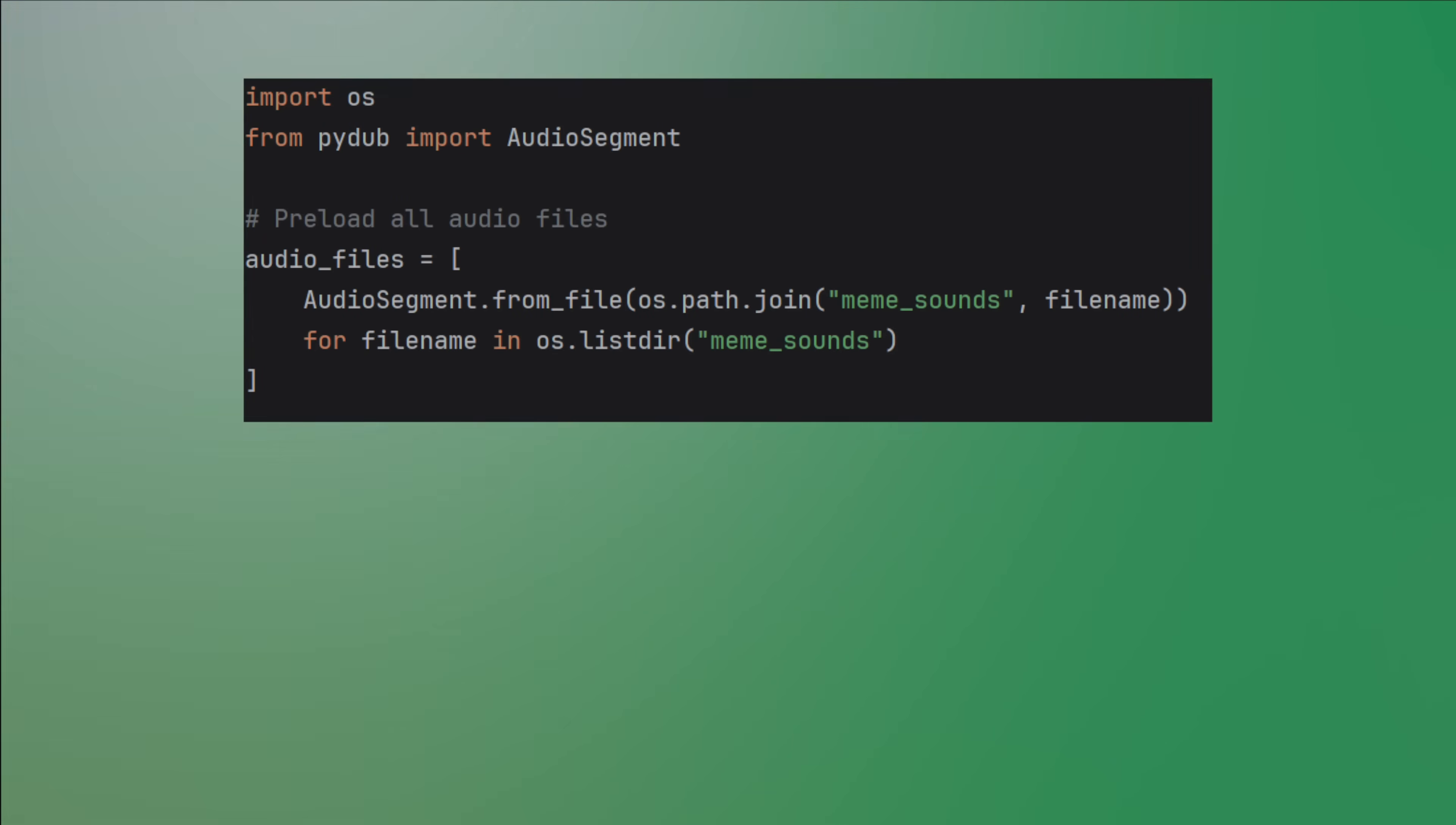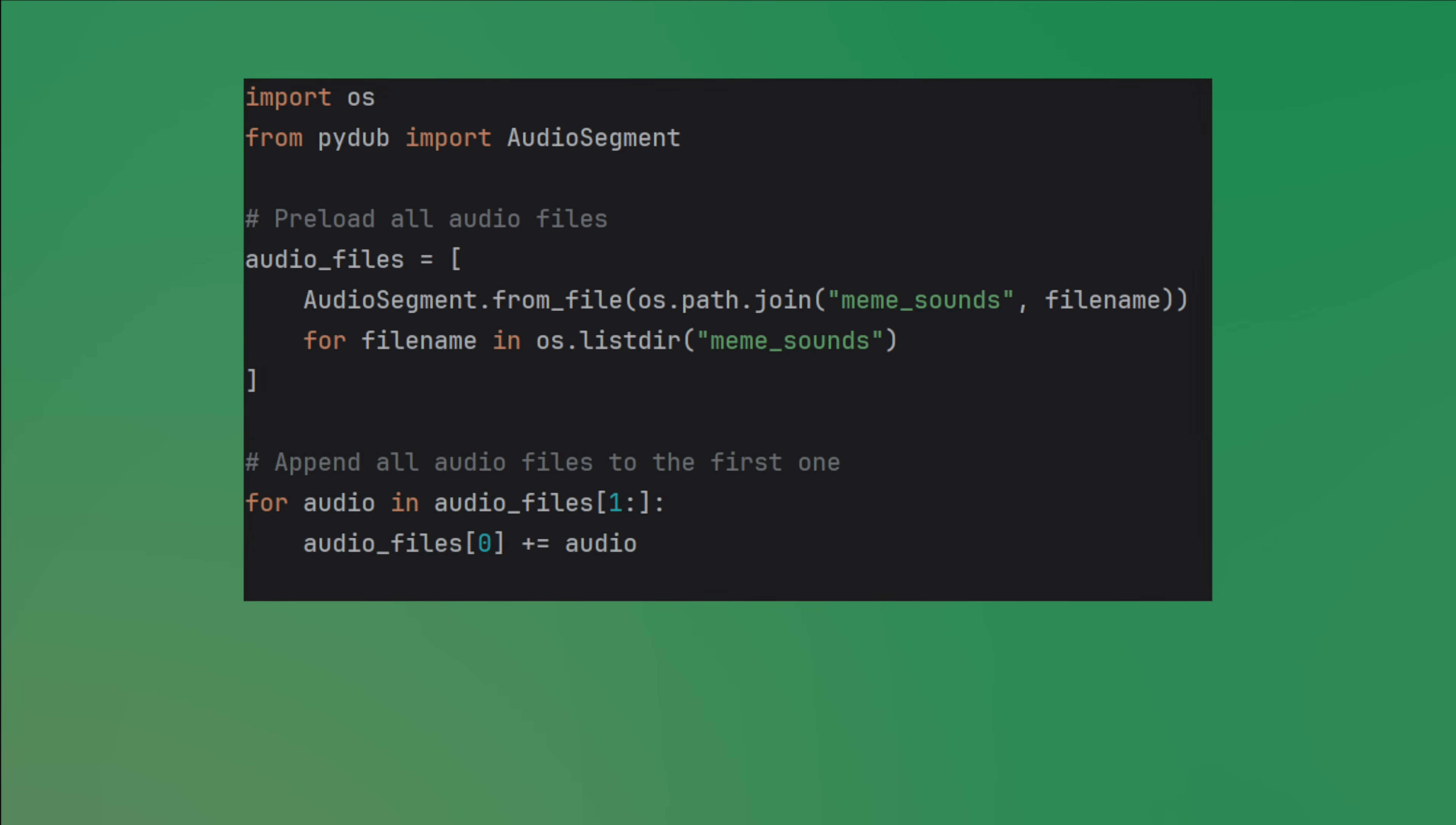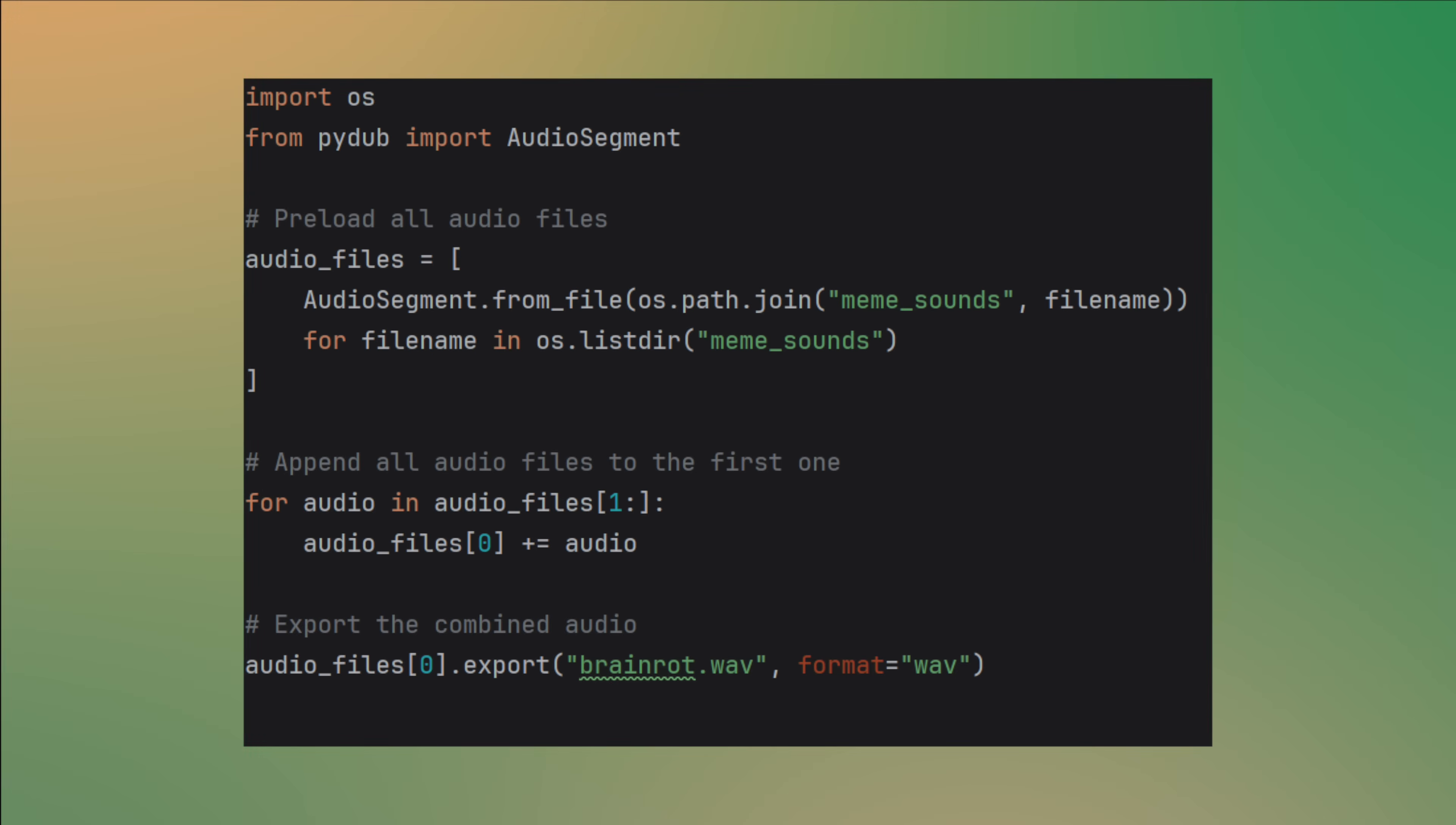The pydub library makes it easy to load these files as audio segment objects. Just iterate over the list and use the overloaded plus operator to combine them into one big file. Then you can export it as a WAV file and enjoy your brain rot compilation.